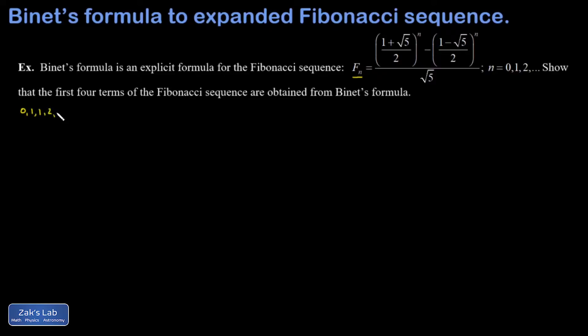So the next one would be 2, the next one would be 3, 5, 8, and so on. What we're asked to do in this problem is plug in the n's into Binet's formula and show that we get the first four terms of the Fibonacci sequence correct. And it starts out simple enough, and then the math can start to get really hairy.